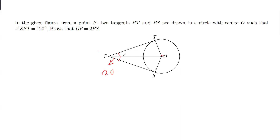Now, we know that the line joining the center to the exterior point of the tangent bisects the angle between the tangents, so we can write each half as 60 degrees. We have to obtain the relation between OP and PS.